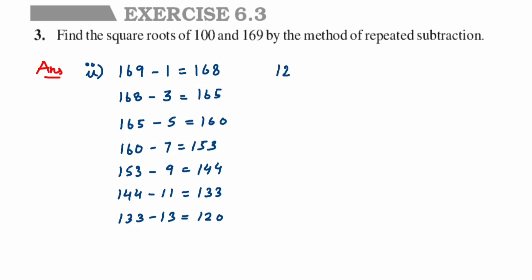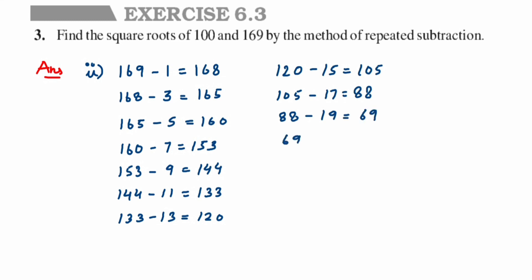Next, 120 minus 15 gives us 105. Then 105 minus 17 gives us 88. Next, 88 minus 19 gives us 69. Then 69 minus 21 gives us 48. Next, 48 minus 23 gives us 25. And then 25 minus 25 gives us 0.